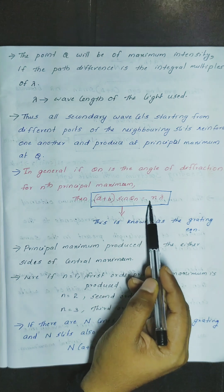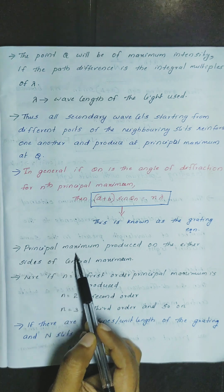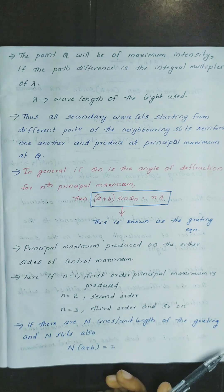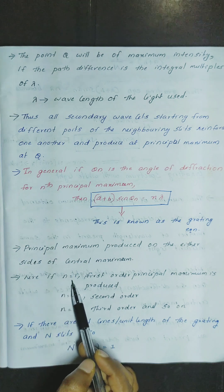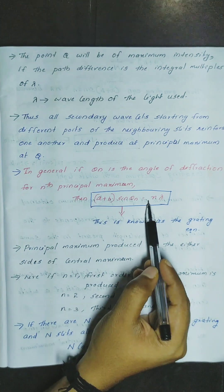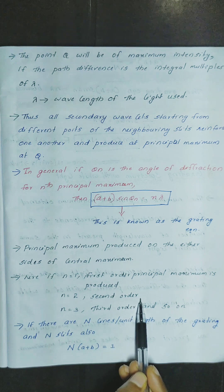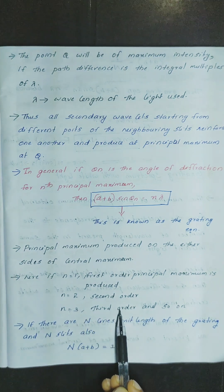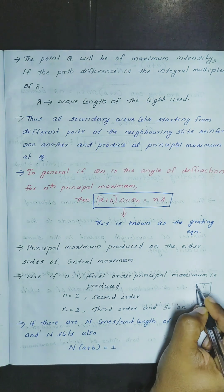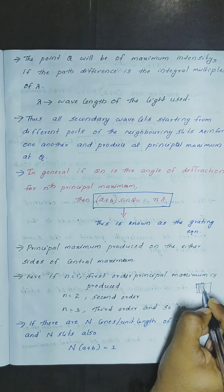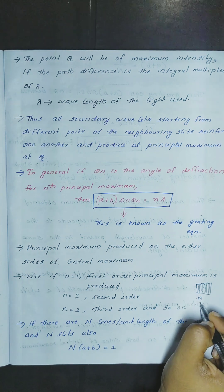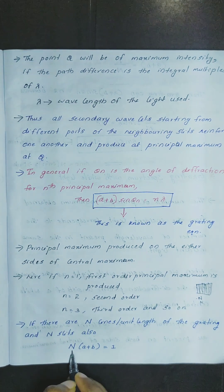When n lambda is satisfied, the principal maximum is produced on either side of the central maximum. The central maximum is at P. If n equals 1, first order principal maximum is produced on either side. If n equals 3, then the third order principal maximum is produced on either side of the central maximum.